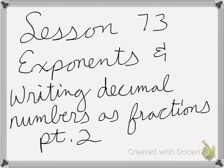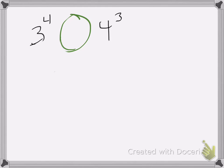All right, so lesson 73 is on exponents and writing decimal numbers as fractions, part 2. So here we have 3 to the 4th power and 4 to the 3rd power, and it wants to know which one is greater. So let's first figure out what those are.